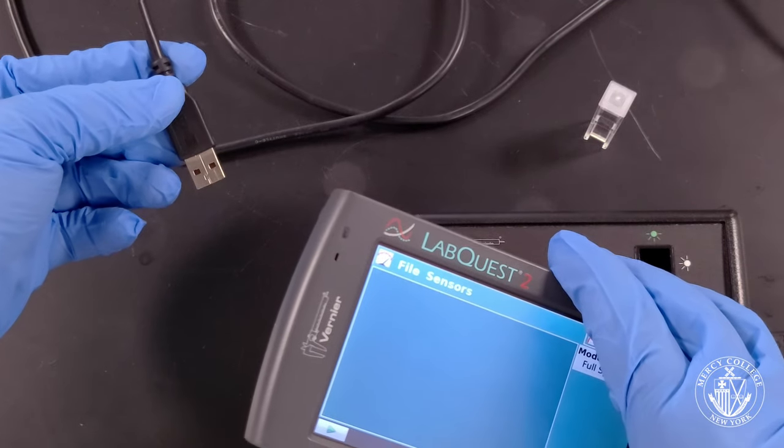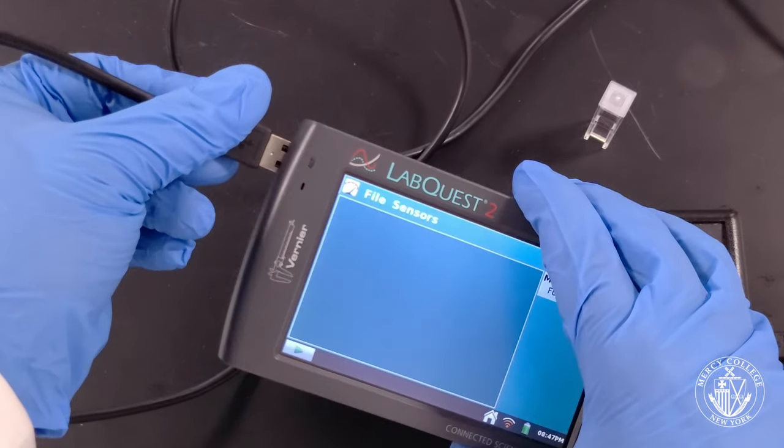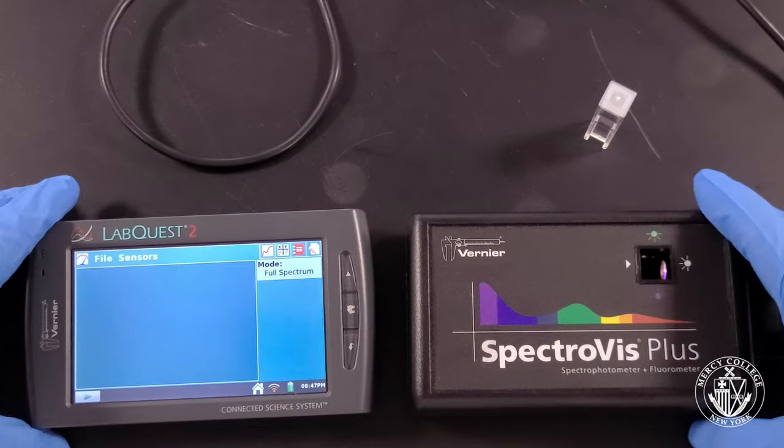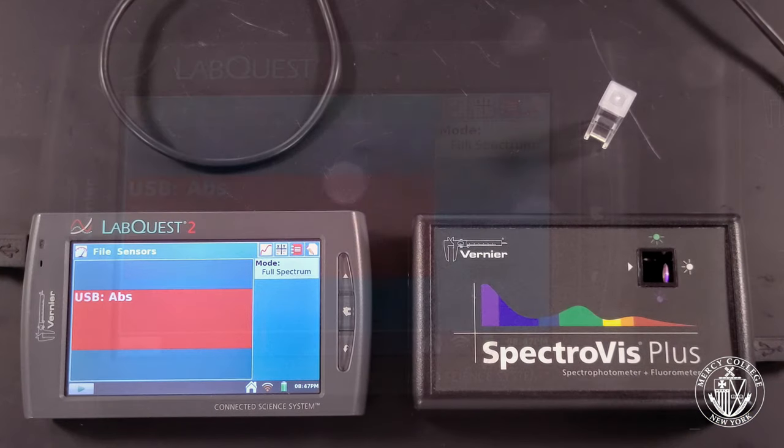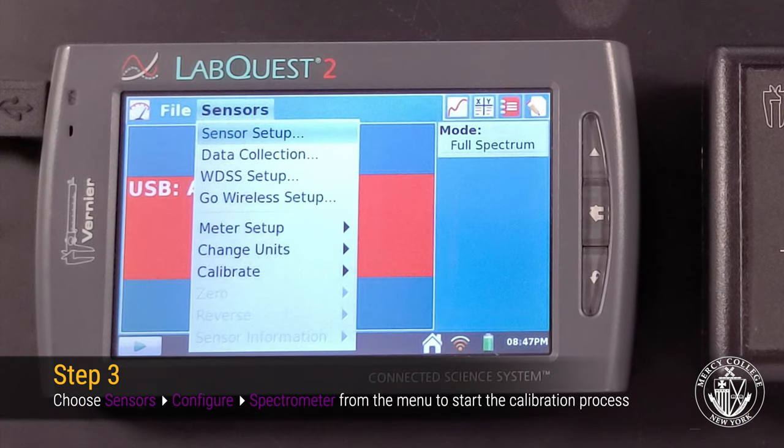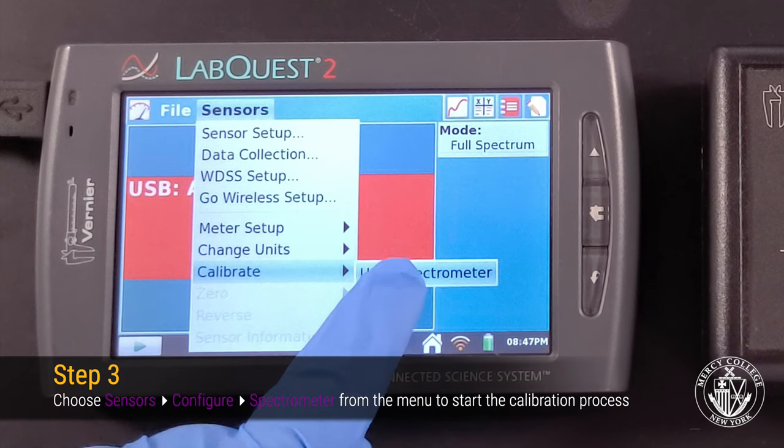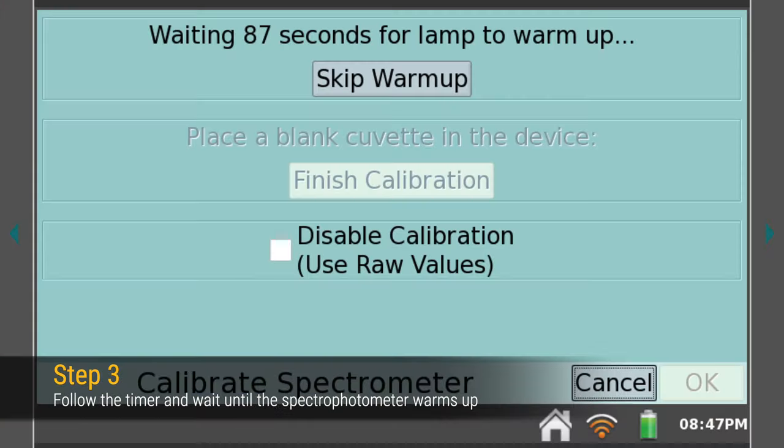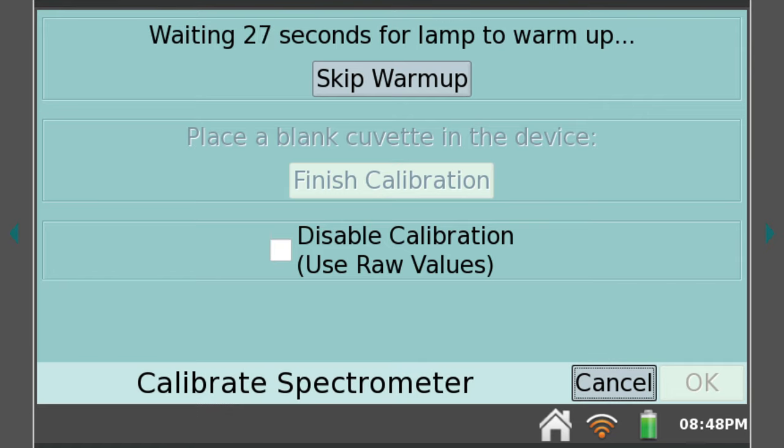Once you've correctly attached the spectrophotometer to the LabQuest, you should see a screen that registers absorbance. Before we can use the spectrophotometer, it needs to be calibrated. To do this, we select Calibrate from the sensors menu. This will initiate a warm-up timer for the lamp, allowing us to get consistent results whenever we use the spectrophotometer.